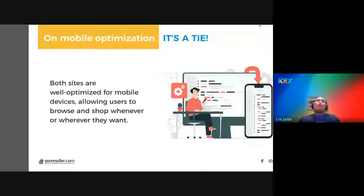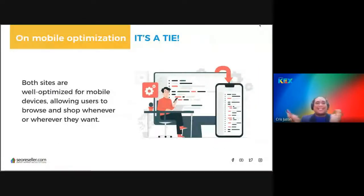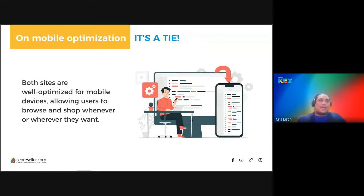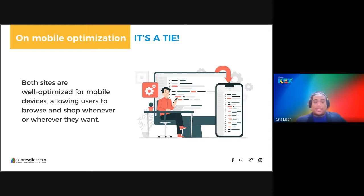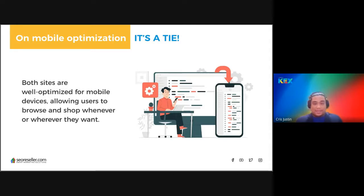For mobile optimization, it's a tie — both sites are well optimized for mobile devices, which is great. A large percentage of online customers, roughly 80%, are now on mobile. Mobile optimization is a must-have for any website because if you're not mobile-friendly, Google will favor a competitor that is. If you haven't optimized for mobile devices yet, now is the time — don't risk being left behind in the ever-growing world of mobile internet usage.